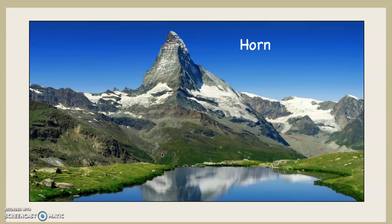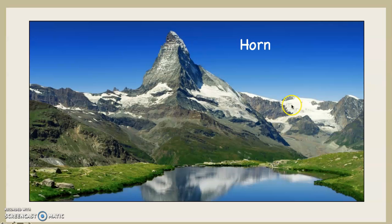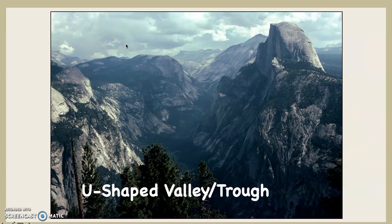That's the most famous one in the world — the Matterhorn, on the border between Switzerland and Italy. The cirque glacier would have been right here, another one here, another one on the backside. You can even see there's a little bit of glacier still left. This would have been buried right up to the top at one point during the greatest glacial advance during the Pleistocene.